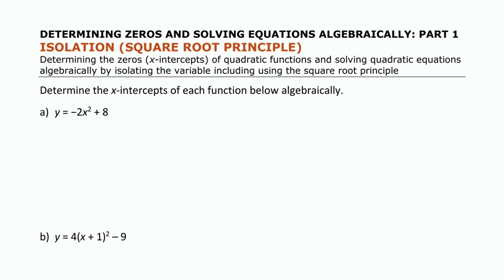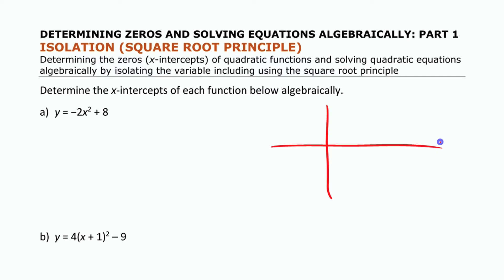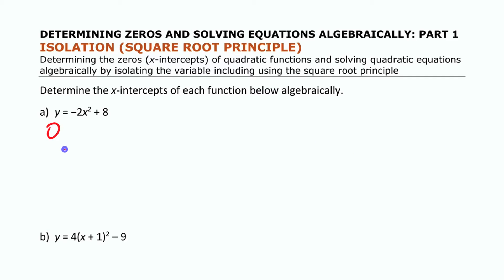Now if we want to find the x-intercepts of this quadratic function, the key is realizing that to find the x-intercepts, y has to be zero. If you think about the graph, wherever the x-intercepts are, they're along the x-axis, and anywhere along that axis y is zero. So to start with, we're going to substitute y equals zero and then solve for x.